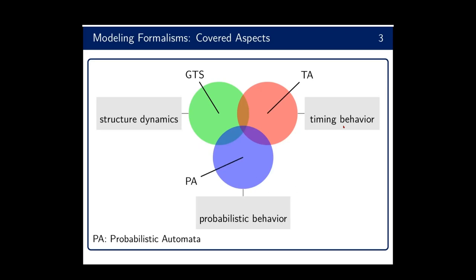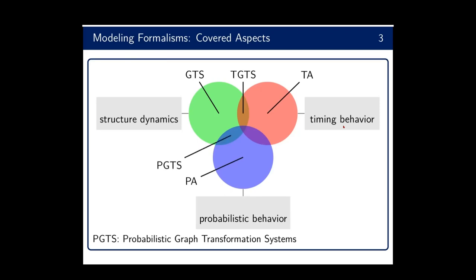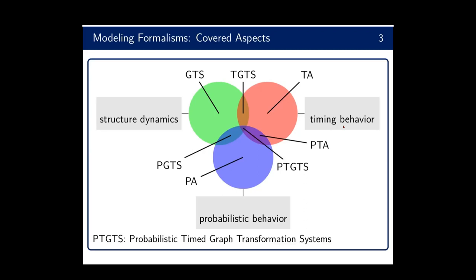There are also combined formalisms such as timed graph transformation systems, combining graph transformation systems with timed automata using clocks and clock guards. Probabilistic graph transformation systems combine graph transformation systems with probabilistic automata, featuring structure dynamics and probabilistic behavior. Probabilistic timed automata combine timed and probabilistic automata. Previously, probabilistic timed graph transformation systems were introduced, featuring all three aspects: graph transformation systems for structure dynamics, timed automata clocks, and probabilistic automata for probabilistic choice.